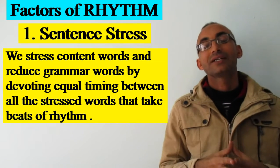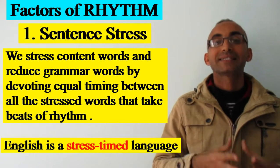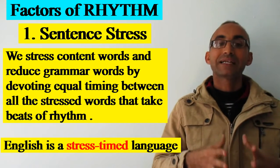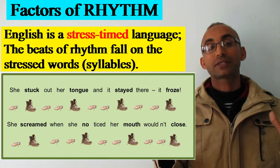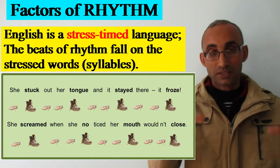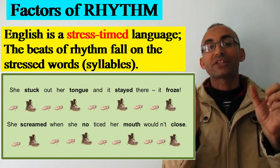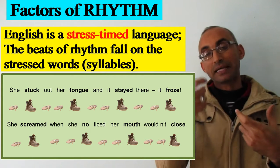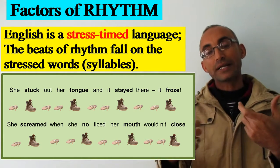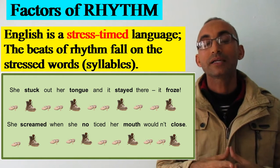English is also characterized by being a stress-timed language. Here we have two key words: 'stress' means the beats of the rhythm fall on the stressed words — the content words — and 'timed' means there is a kind of equal timing between those content words. So this regular pattern — stressed, then space, then stressed, then equal space — creates what we call rhythm.